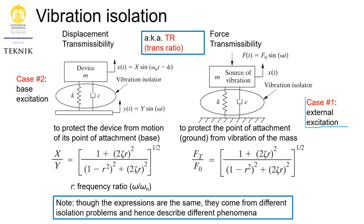There are two different cases of forced vibration: external excitation and base excitation. External excitation is the case of a vibrating machinery — the machine is vibrating and we would like to protect the ground or building from unnecessary vibration transmitted from the machinery. Base excitation is usually the case of a building oscillating due to an earthquake.